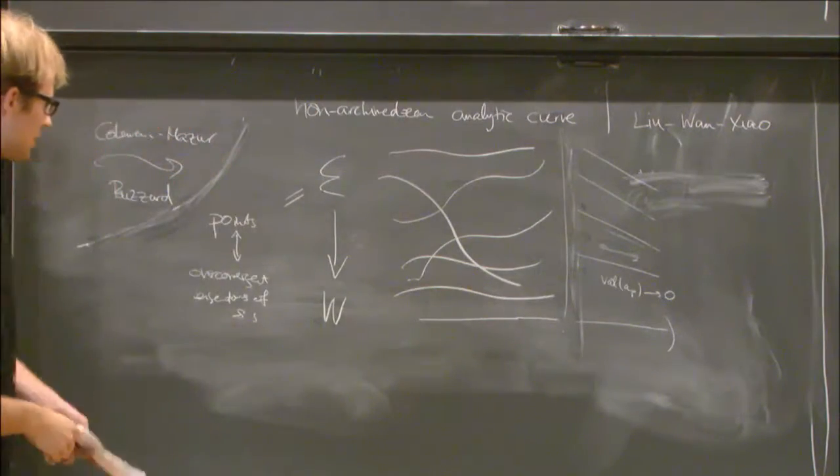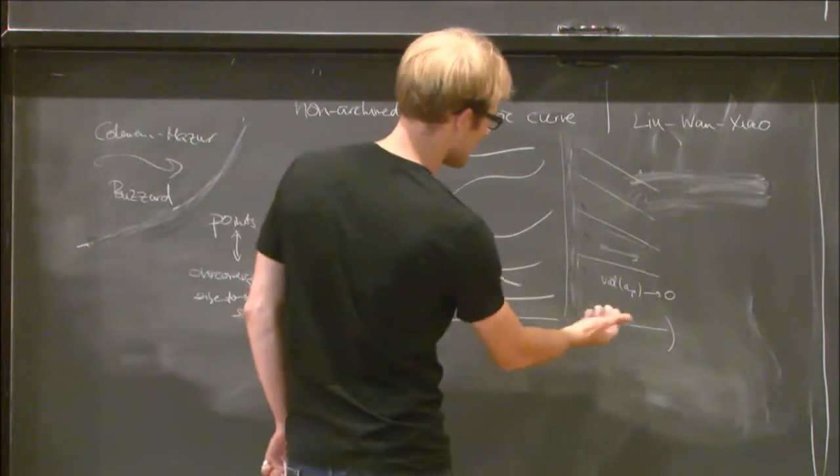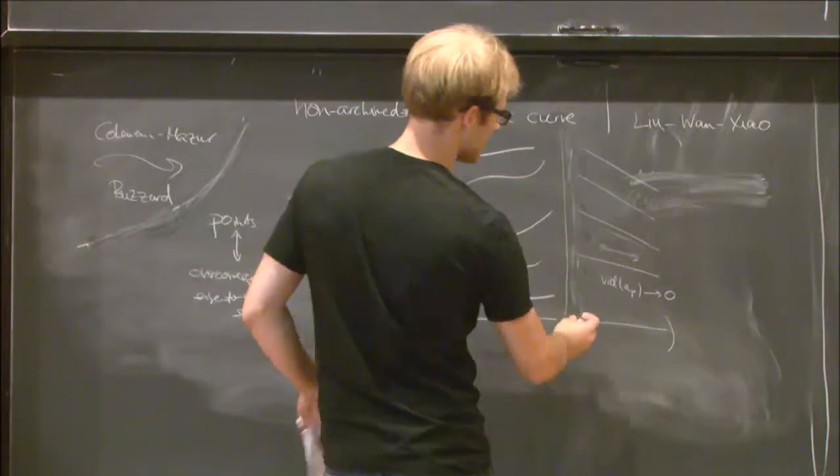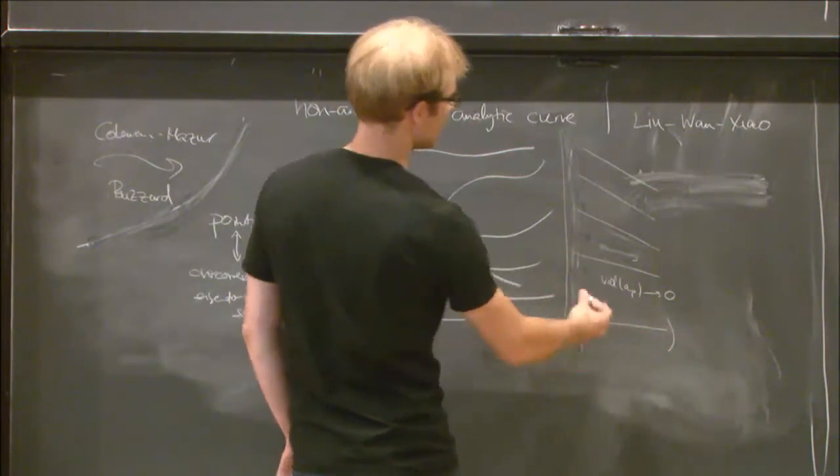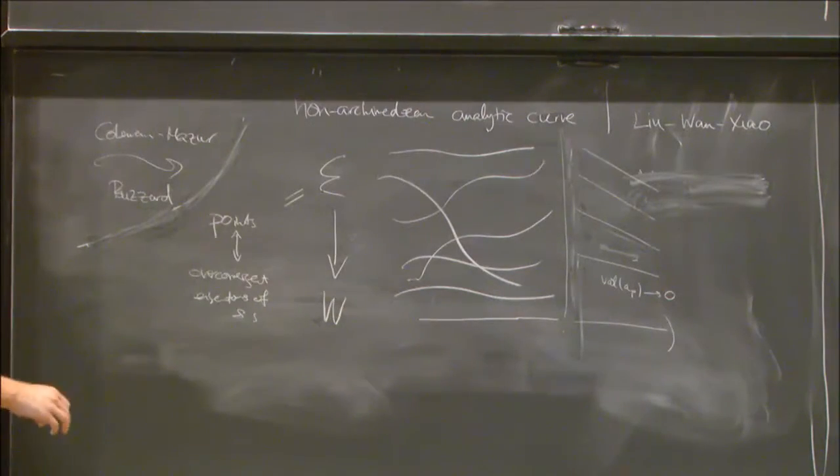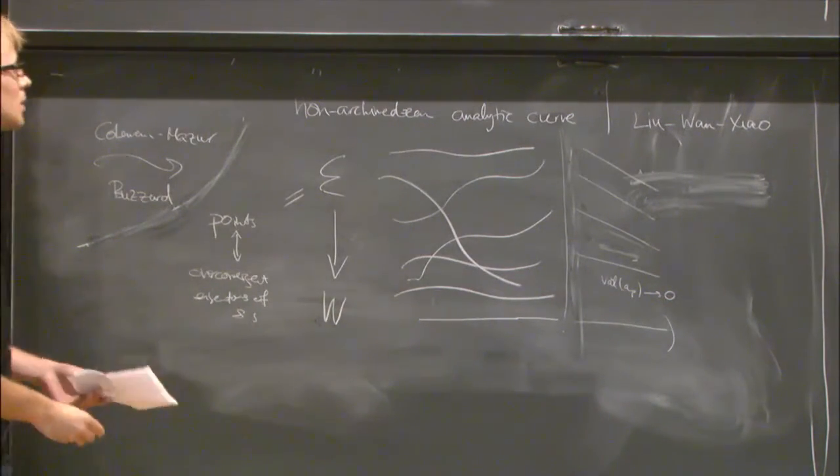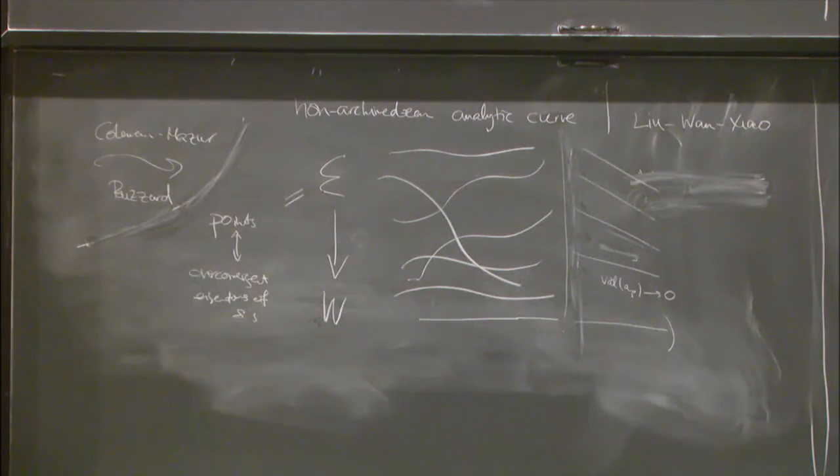So, there's a philosophy, due to Coleman, that this should correspond to, that this should be related to trying to glue on points to the eigencurve, which are in characteristic p, rather than characteristic zero. And that's one topic that I'm currently interested in.